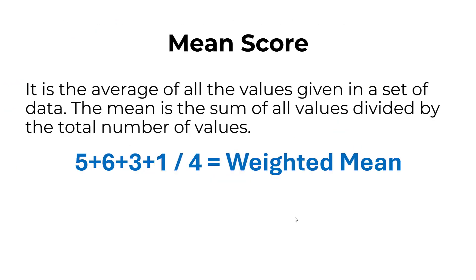The mean is the average of all values in a dataset — the sum of all values divided by the total number of values. For example, if four people each rate a statement, we sum all their ratings and divide by four to get the weighted mean, or composite score.